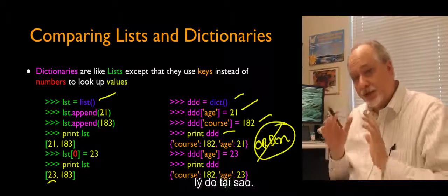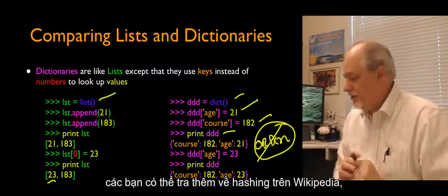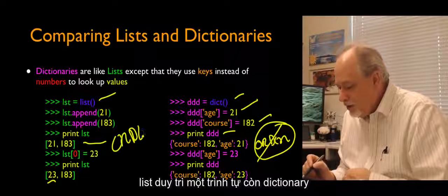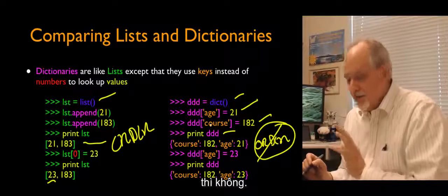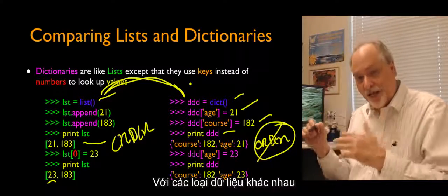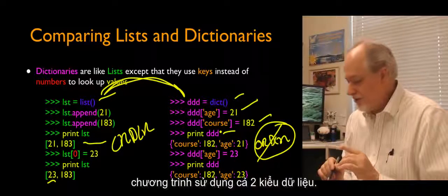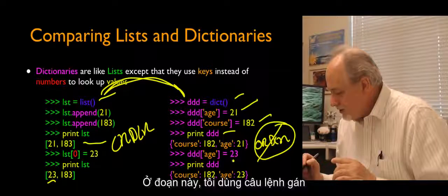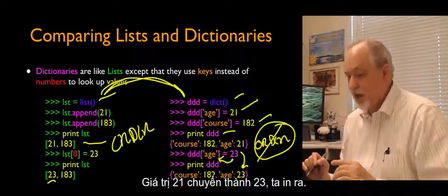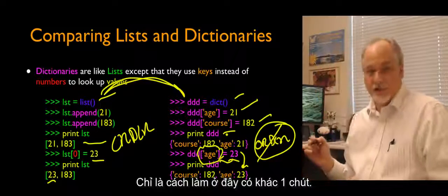The reason order is not preserved is a compromise that makes dictionaries fast using a technique called hashing — that's how it works internally. The important thing for programmers is that lists maintain order and dictionaries do not. Dictionaries give us power we don't have in lists. Different kinds of data are better represented as a list or a dictionary depending on the problem. We can change a value by saying ddd sub age equals 23, which changes the 21 to 23.